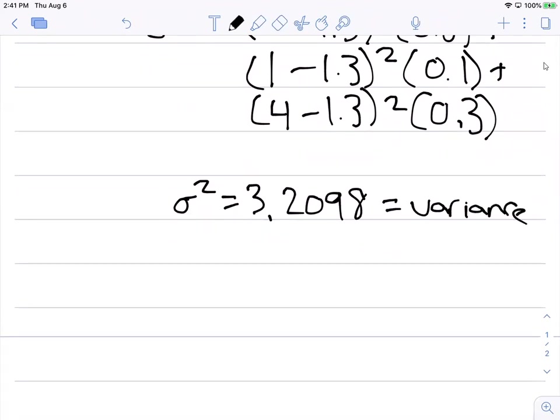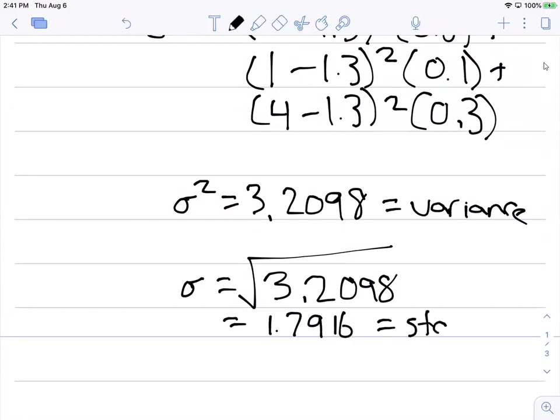Now the variance isn't always meaningful, so sometimes we'll want to take the square root of it to find the standard deviation. So the square root of 3.2098 is going to equal 1.7916 and that's our standard deviation.